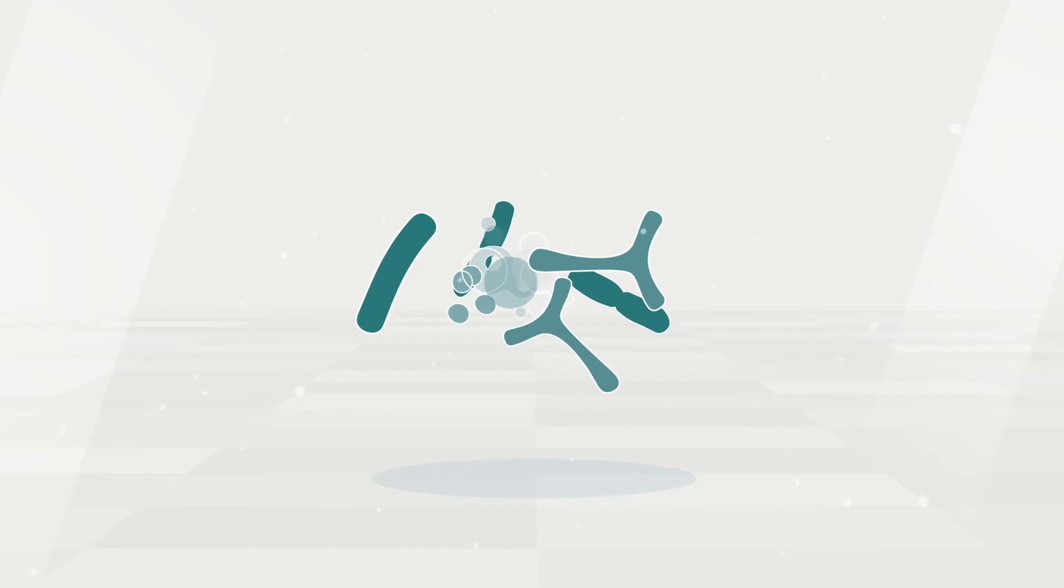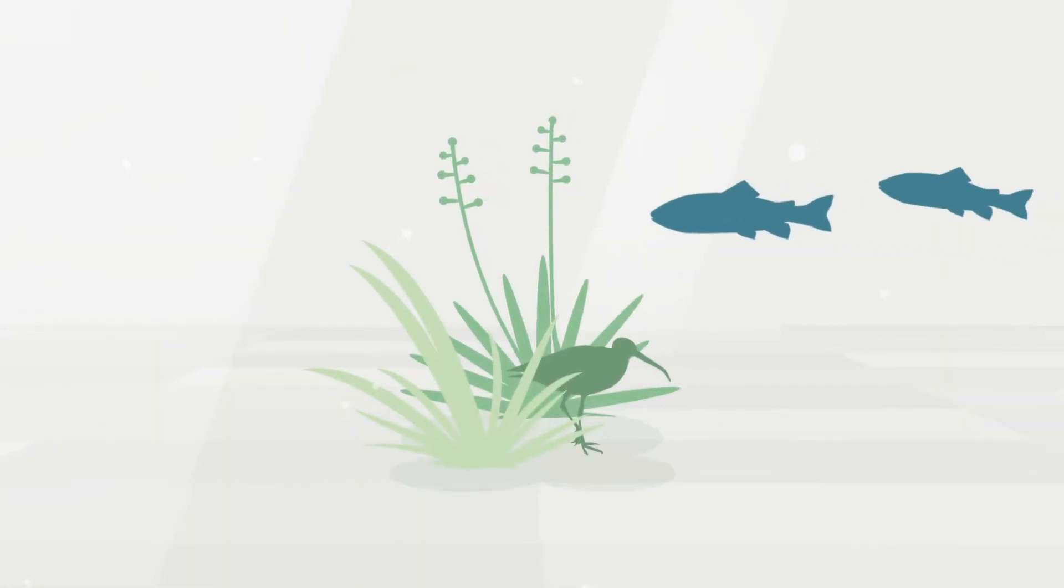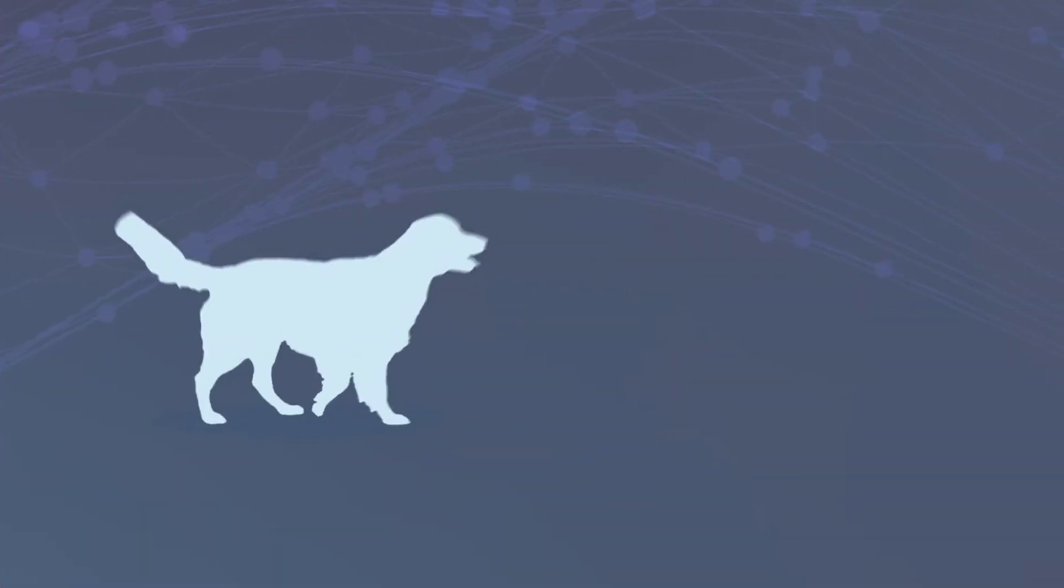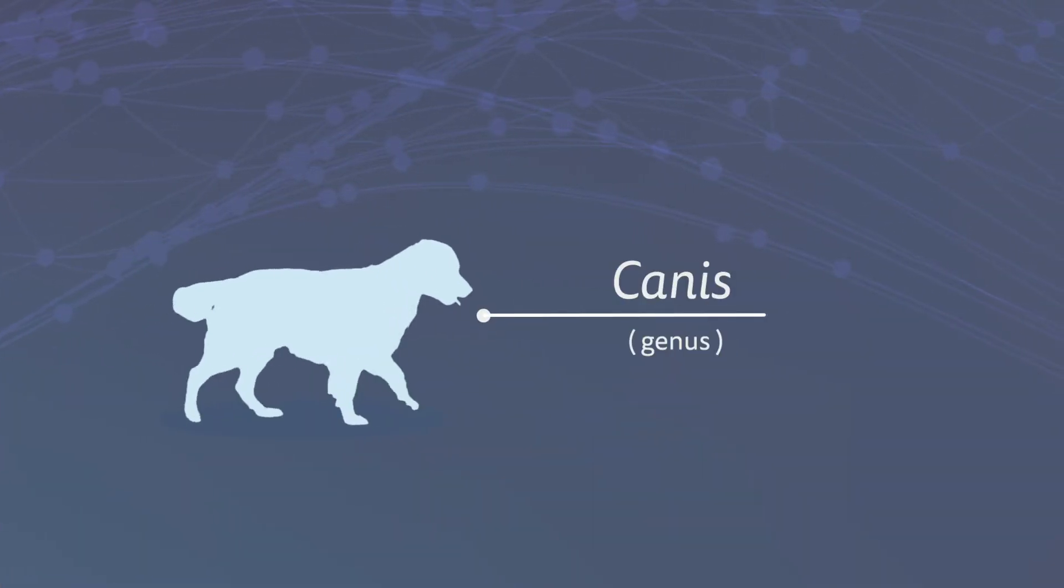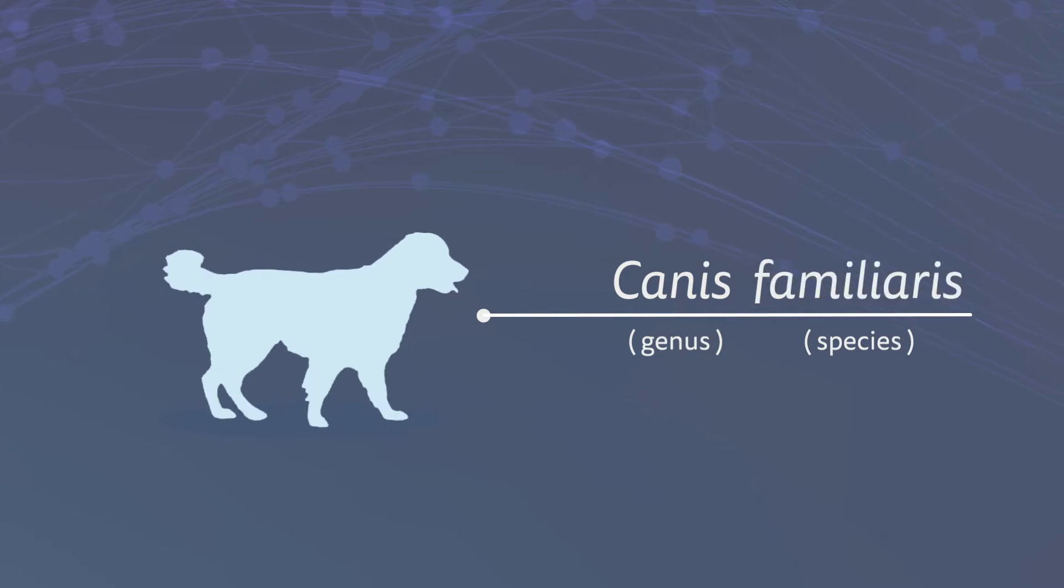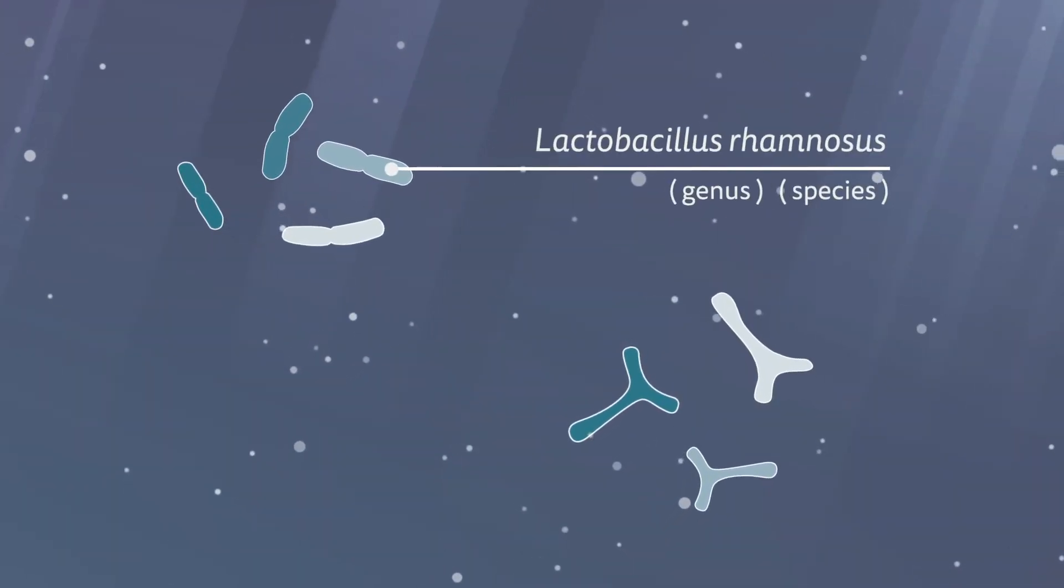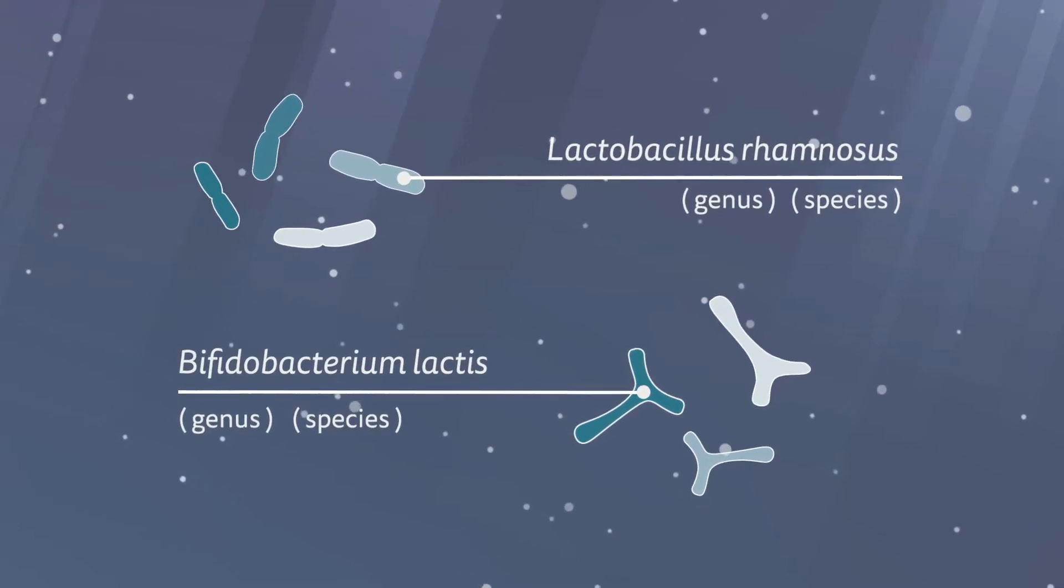Scientists classify probiotics the same way they classify all living things, by genus and species. For example, your dog's genus is Canis, and its species is Familiaris. Two common probiotic microbes are Lactobacillus rhamnosus and Bifidobacterium lactis.